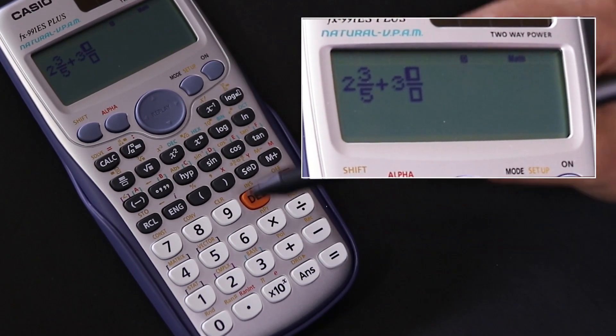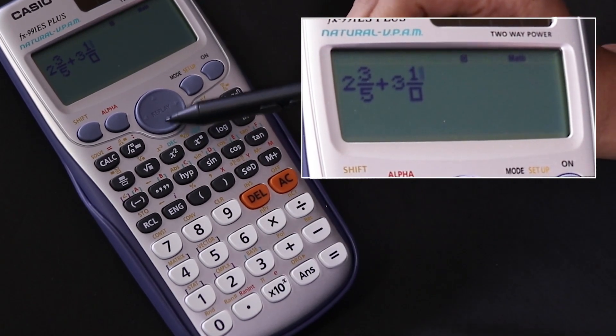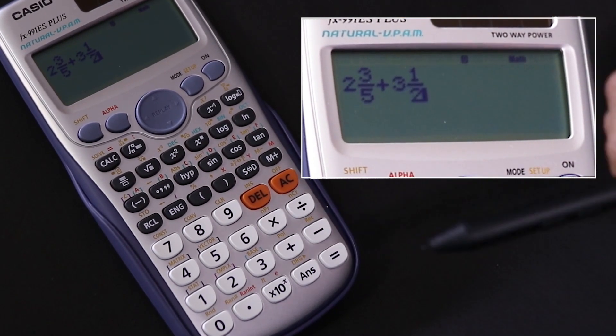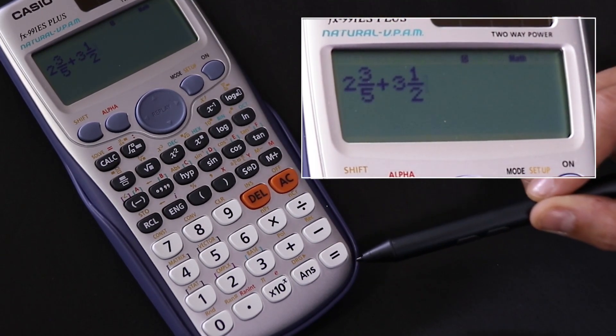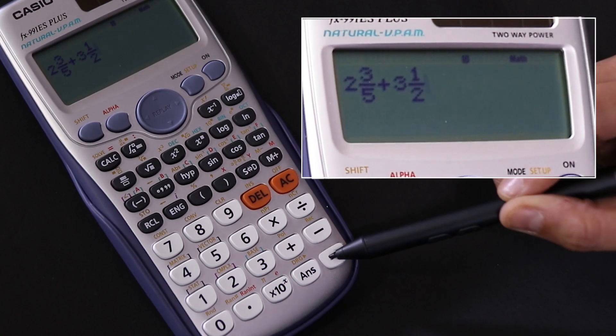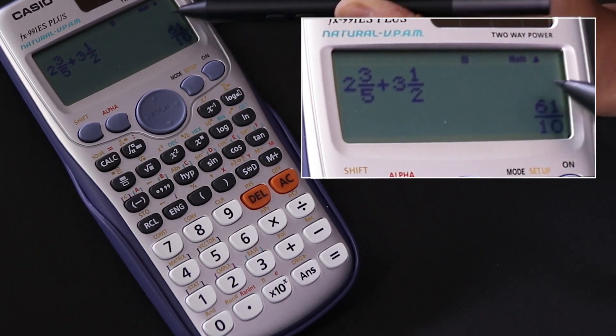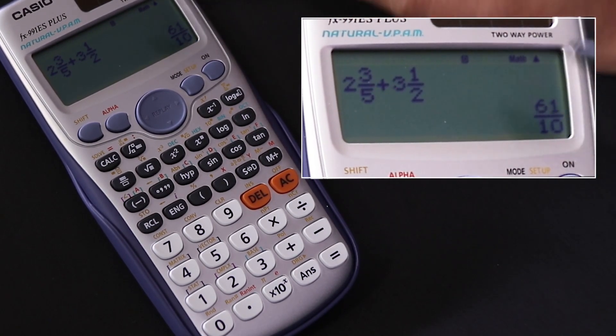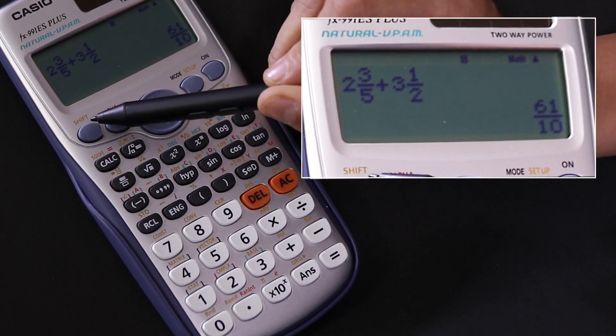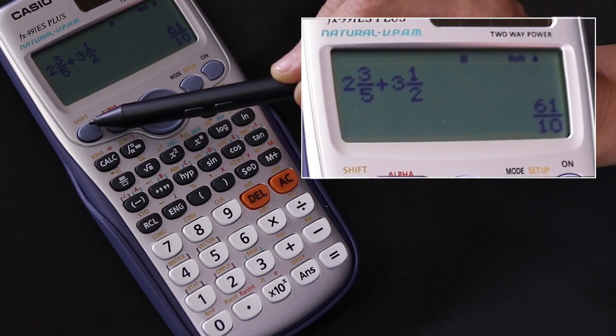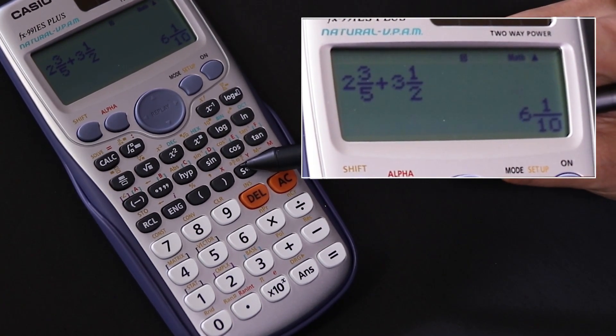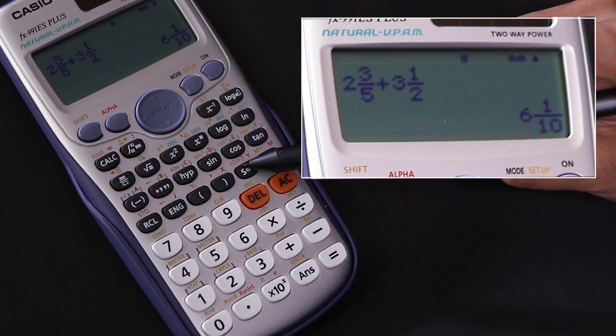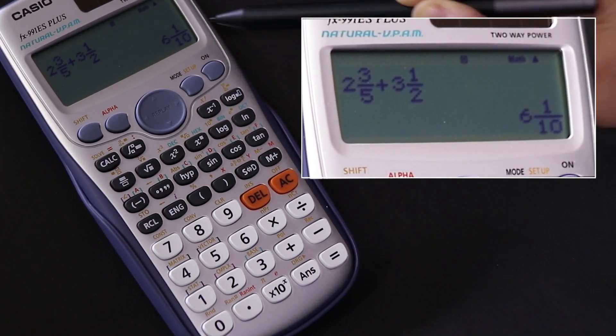When we press equals after we move the cursor to the right, we should get 6 and 1/10, but it's 61/10, it's an improper fraction. So what we need to do to get 6 and 1/10 is shift SD and press the SD until you see the 6 and 1/10.